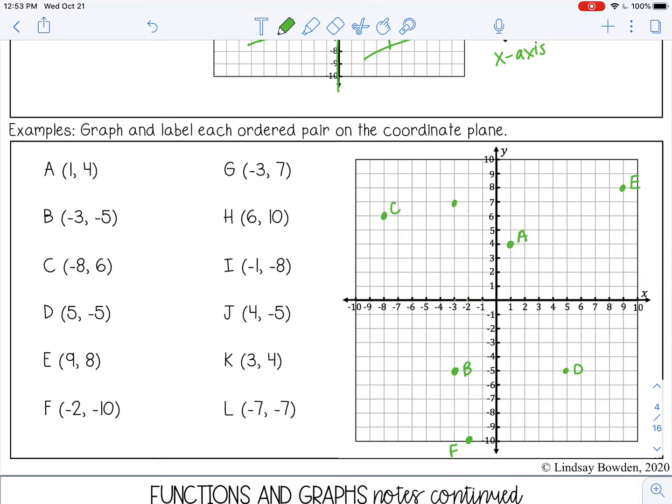H is at six, ten. So right six, up ten, all the way up here at the top. I is negative one, negative eight. So left one, down eight.